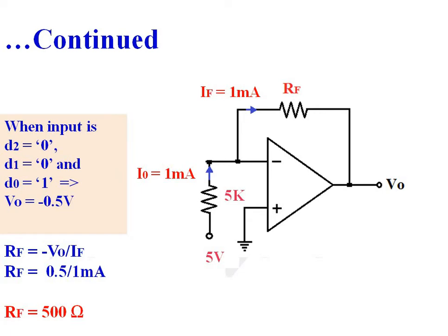When input is 001, output voltage is minus 0.5V. Current flows through resistance R of 5 kilo-ohms, assumed as 1 milliampere. This current flows through feedback resistance RF, causing a voltage drop of 0.5V across it. So RF equals minus V0 divided by IF, giving RF equal to 500 ohms.